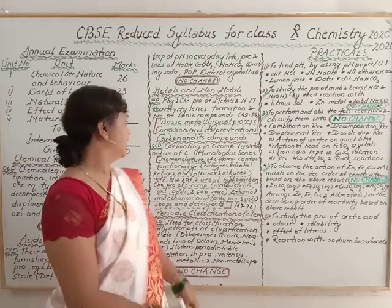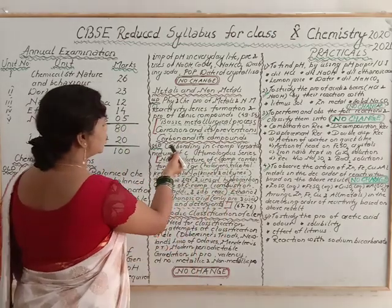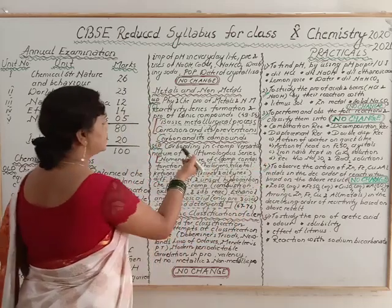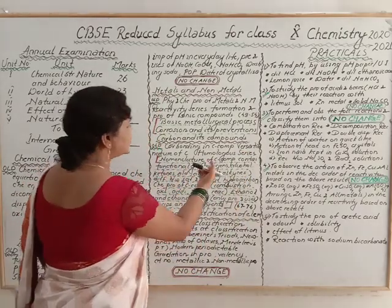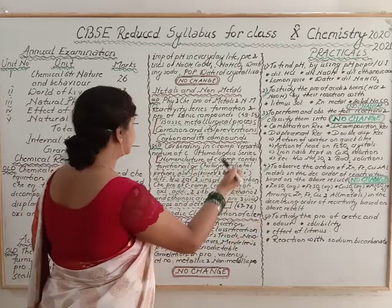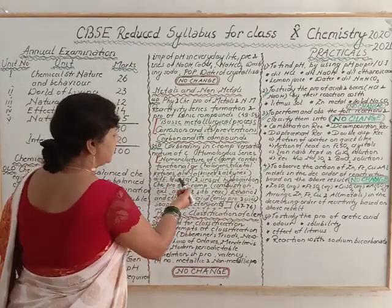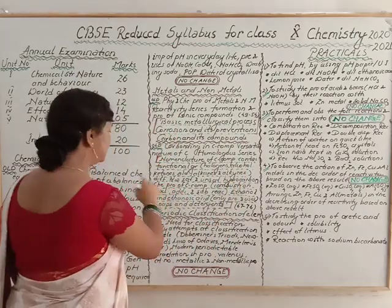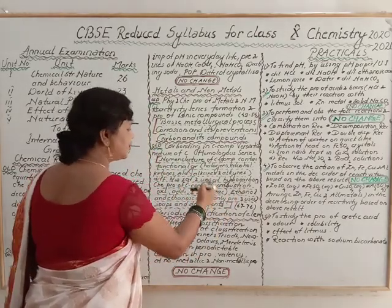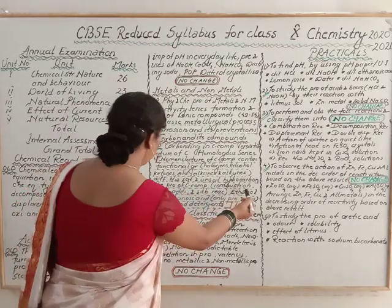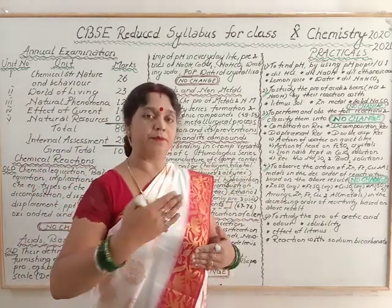Next is Carbon and its Compounds — the fourth chapter of Class 10 Chemistry. The old syllabus included: covalent bonding in carbon compounds, versatile nature of carbon, homologous series, nomenclature of carbon compounds containing functional groups (halogens, alcohol, ketones, aldehydes, alkanes, alkenes), double bond and triple bond, difference between saturated and unsaturated hydrocarbons, chemical properties of carbon compounds (combustion, oxidation, addition, substitution reactions), ethanol and ethanoic acid properties and uses, and soaps and detergents.